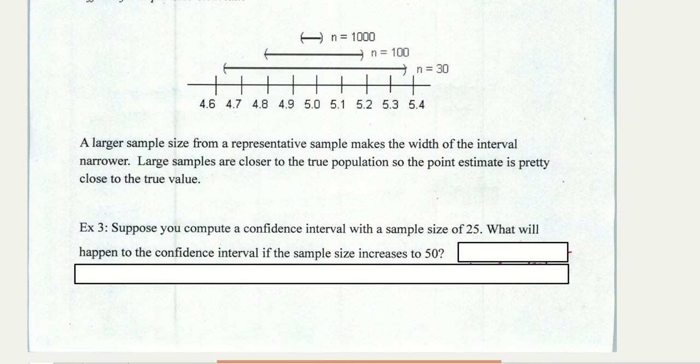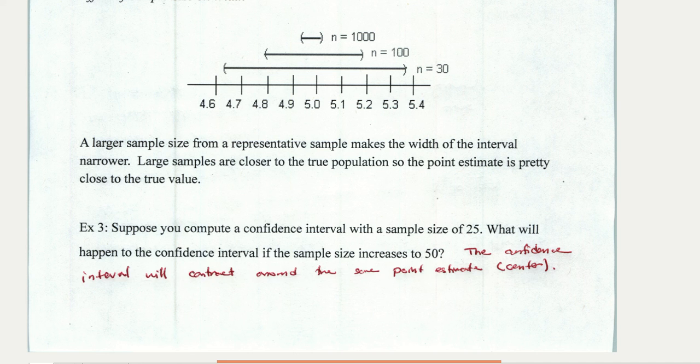So suppose that you compute a confidence interval with a sample size of 25. What will happen to that confidence interval if the sample size increases to 50? So here we're starting with a smaller sample size and we're increasing it to a larger one. And as we do that, the standard deviation of the sample means gets smaller. And so we can expect that that confidence interval will collapse, will contract around the point estimate, the center of that interval.